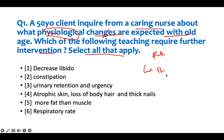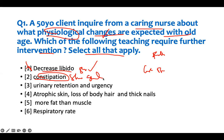In the elderly: libido and sexual function go down — that's why there's erectile dysfunction. They get constipation because the gut slows down — no teaching needed for that. Urinary retention and urgency — they retain urine and have to pee more often. These are all expected changes, so no intervention is needed.